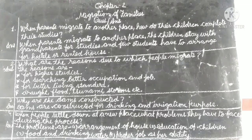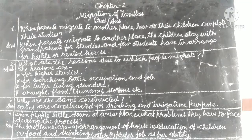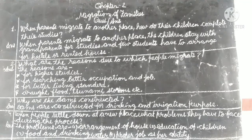So the first question is: when parents migrate to another place, how do their children complete their studies? Answer: when parents migrate to another place, the children stay with grandparents for studies, and few students have to arrange for hostels or rental houses.